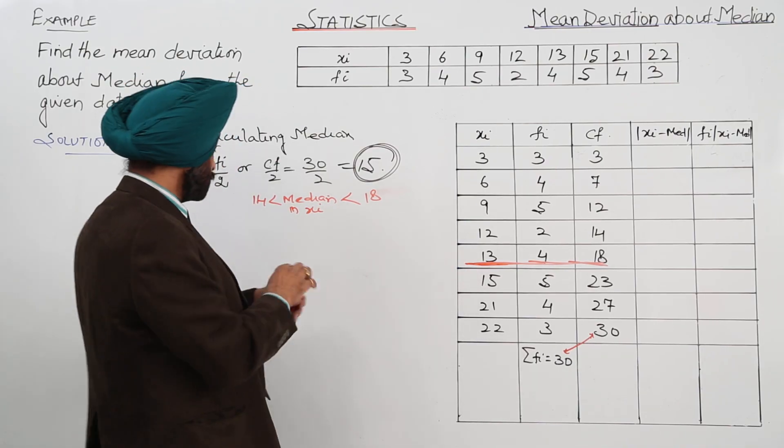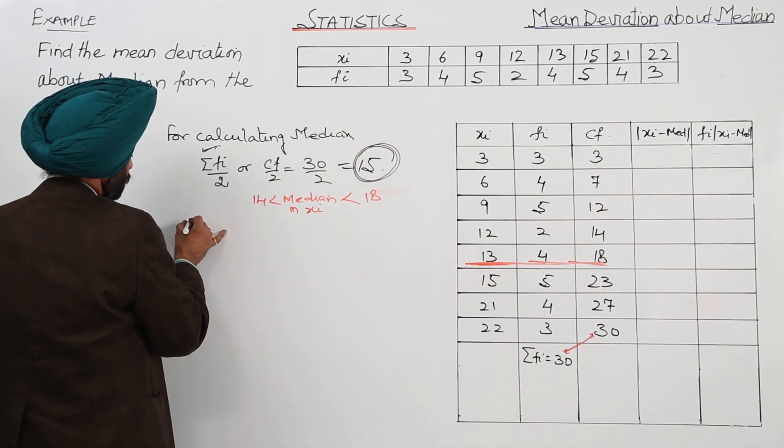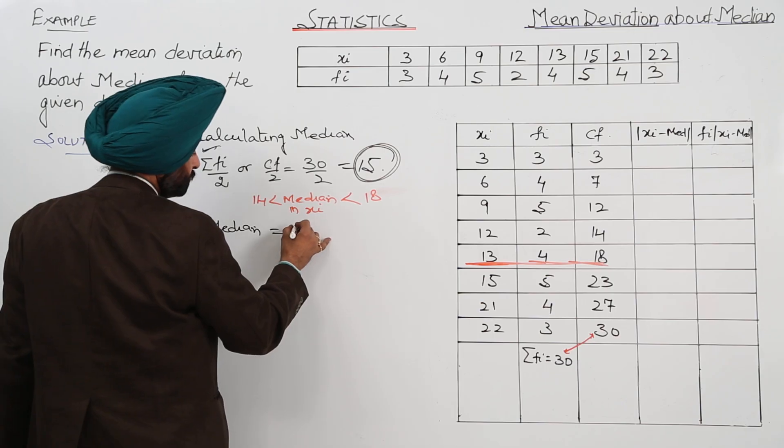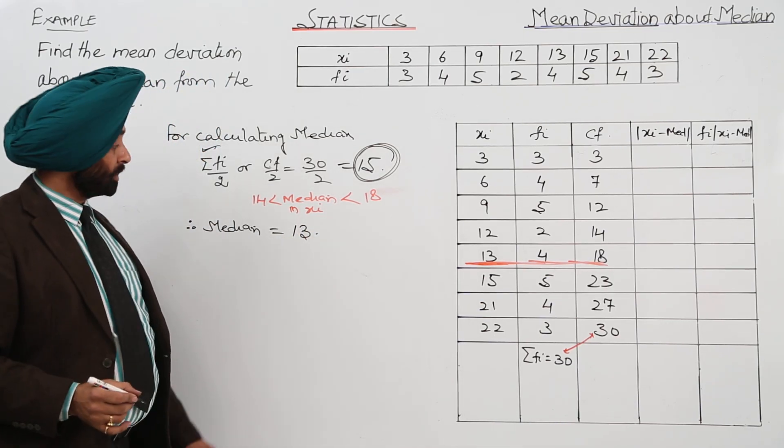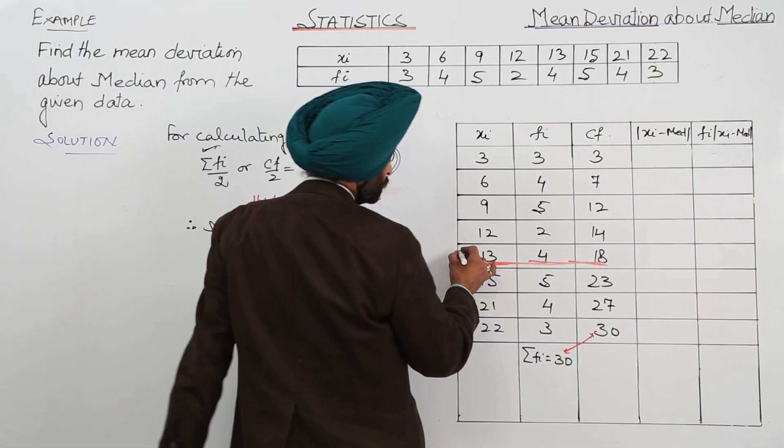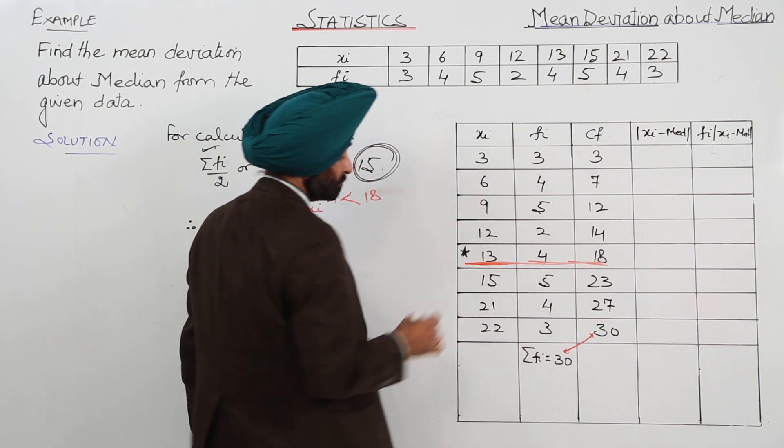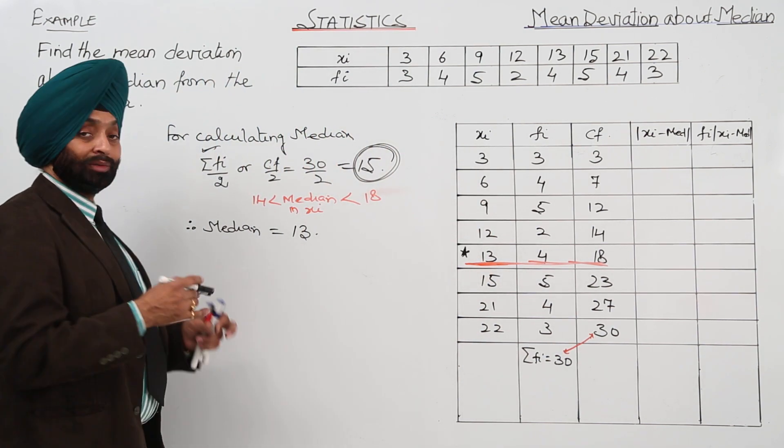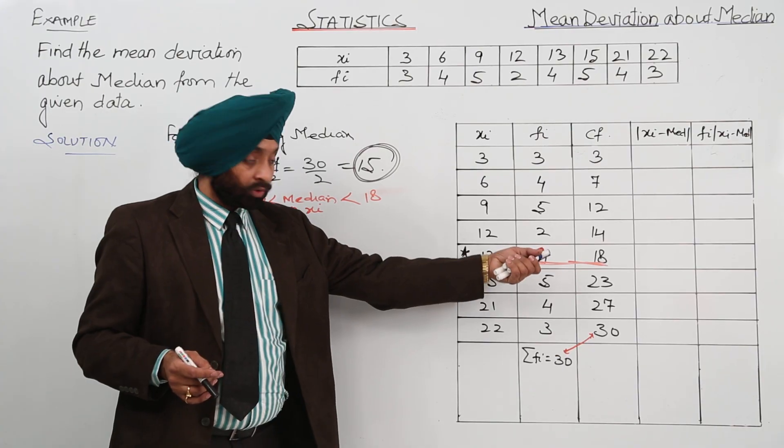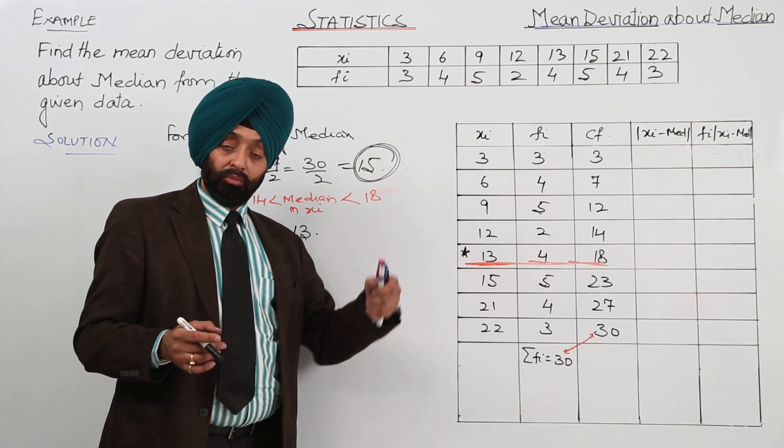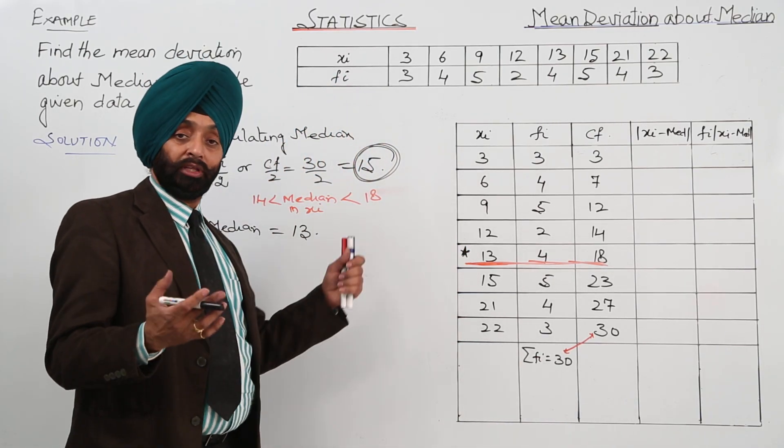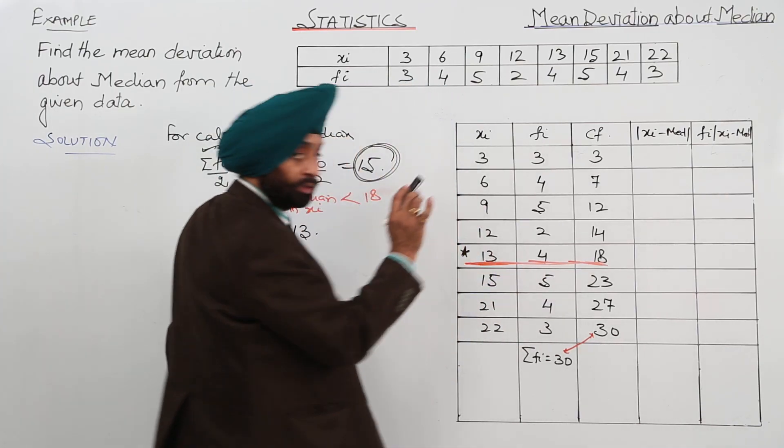Is it clear? So, therefore, median is equal to 13. Is it clear? 30 upon 2 is 15. And where 15 lies? 15 lies here. So this is the median. Or in some books you can also get it. That the Xi lies in which class from 14 to 18. It is 13. So, and this 30, it was even. So, 13 plus 13 upon 2 will be the median. One and the same thing. You can just underline it. This is the median.